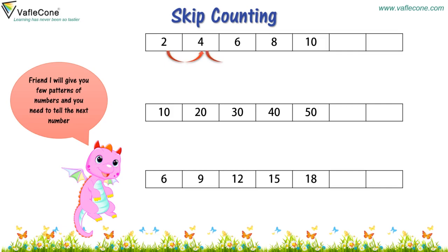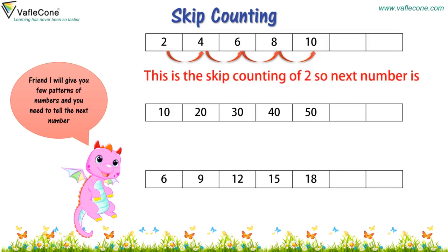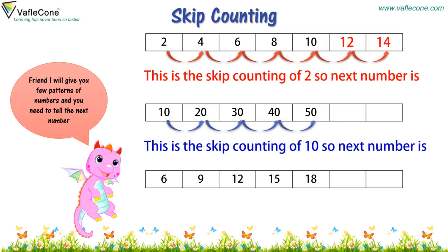2, 4, 6, 8, 10. This is the skip counting of 2. So the next number is 12, 14. 10, 20, 30, 40, 50. This is the skip counting of 10. So the next number is 60.